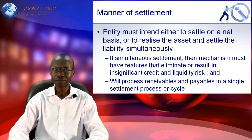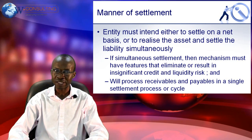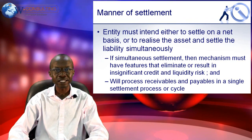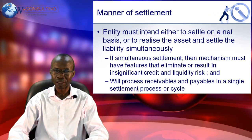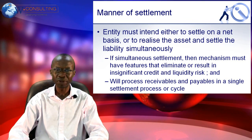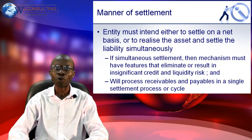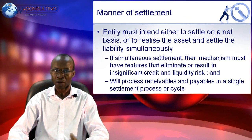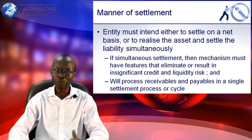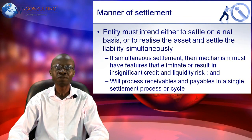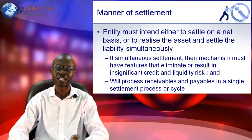On the manner of settlement, the entity itself must intend to either settle on a net basis or to realize the asset and settle the liability simultaneously. When we're talking about simultaneous settlement, we must have a mechanism in place that eliminates or results in insignificant credit risk or liquidity risk to the organization, and the process of settlement will be done in one single settlement cycle.